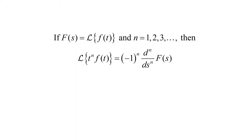If F(s) is the Laplace transform of f(t) and n equals one, two, three, four, and so on, then the Laplace transform of t to the nth power times f(t) will equal negative one to the n times the nth derivative with respect to s of F(s). So this gives us a way to deal with the Laplace transform of a product of t to a power times another function.